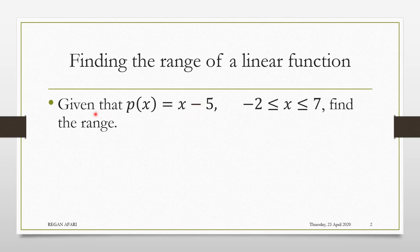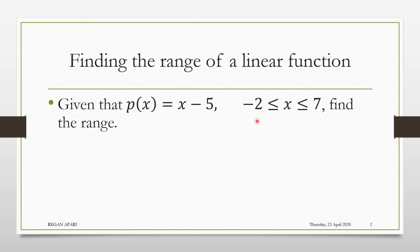We have an example here. P of x is equal to x minus 5, defined on this domain, and we are told to find the range. Since it is a linear function, the approach is quite straightforward — use the two extremities as the input for this function. They produce some output and those outputs will be used to form your range.